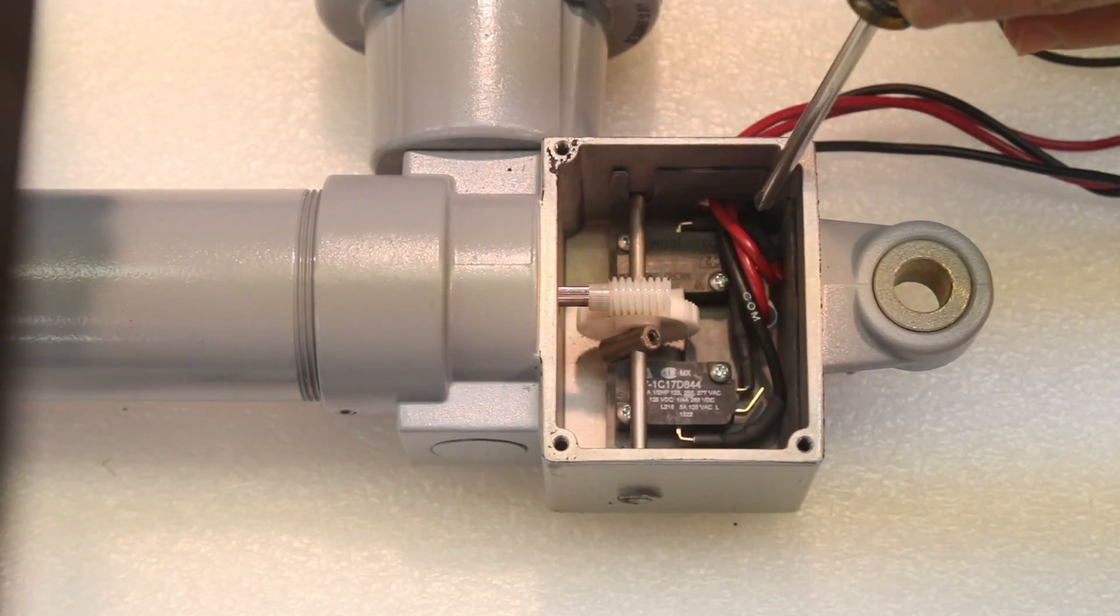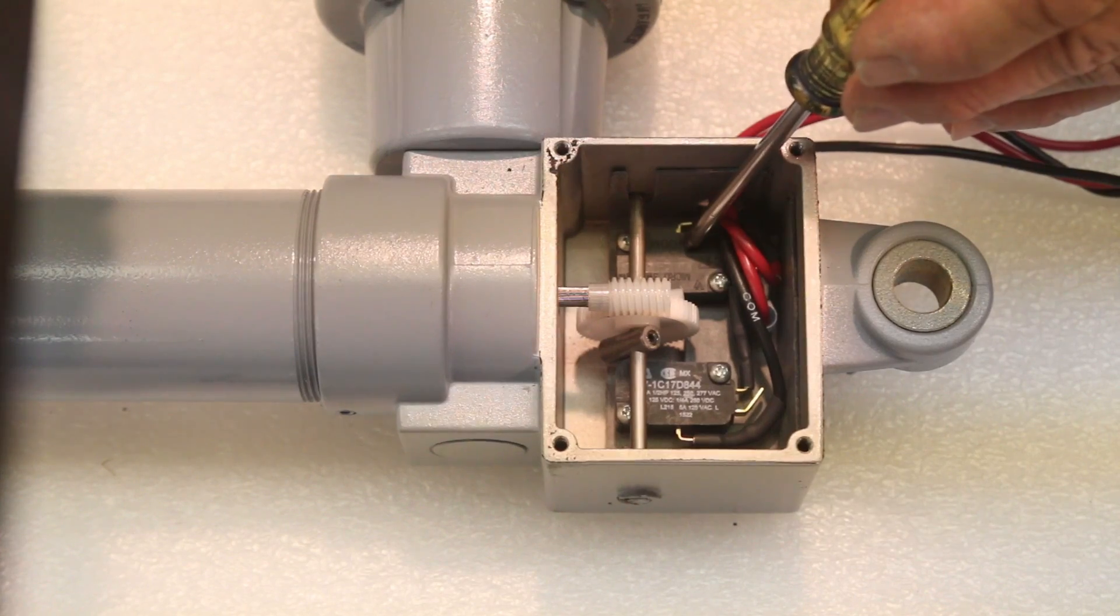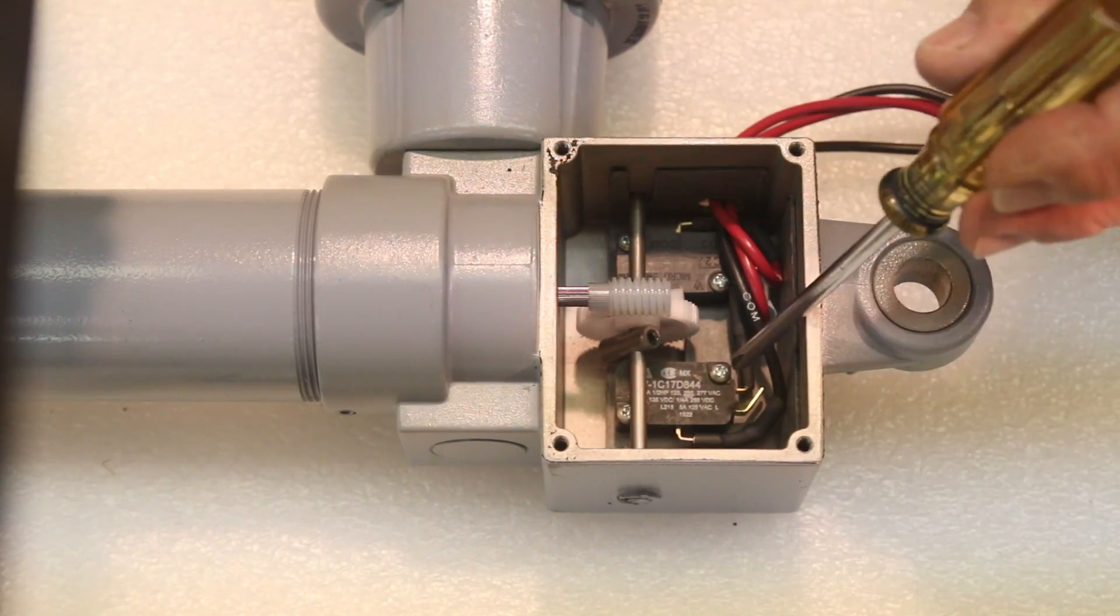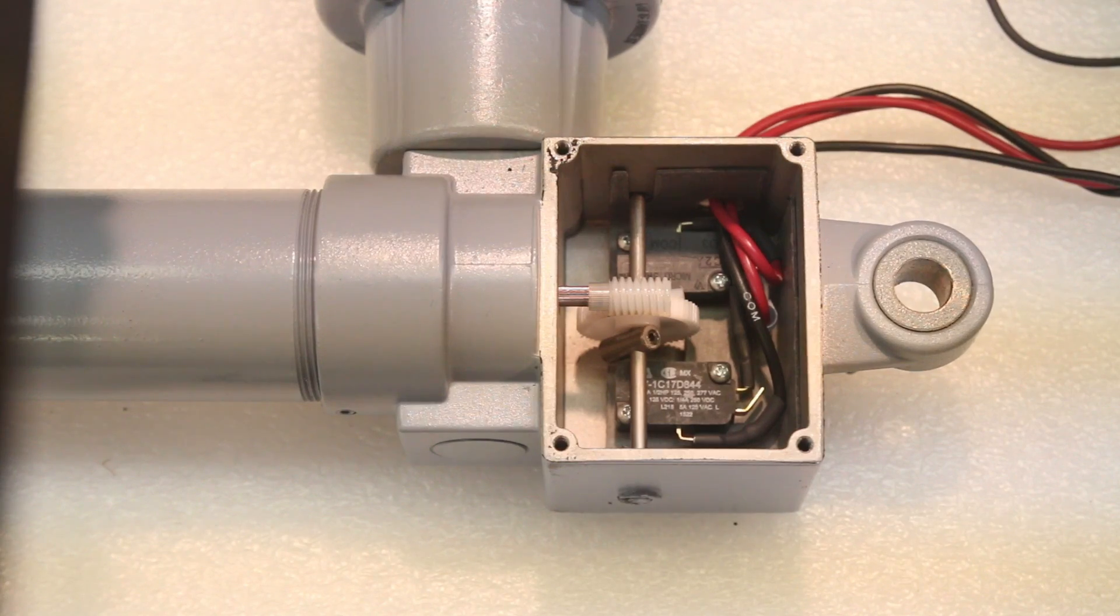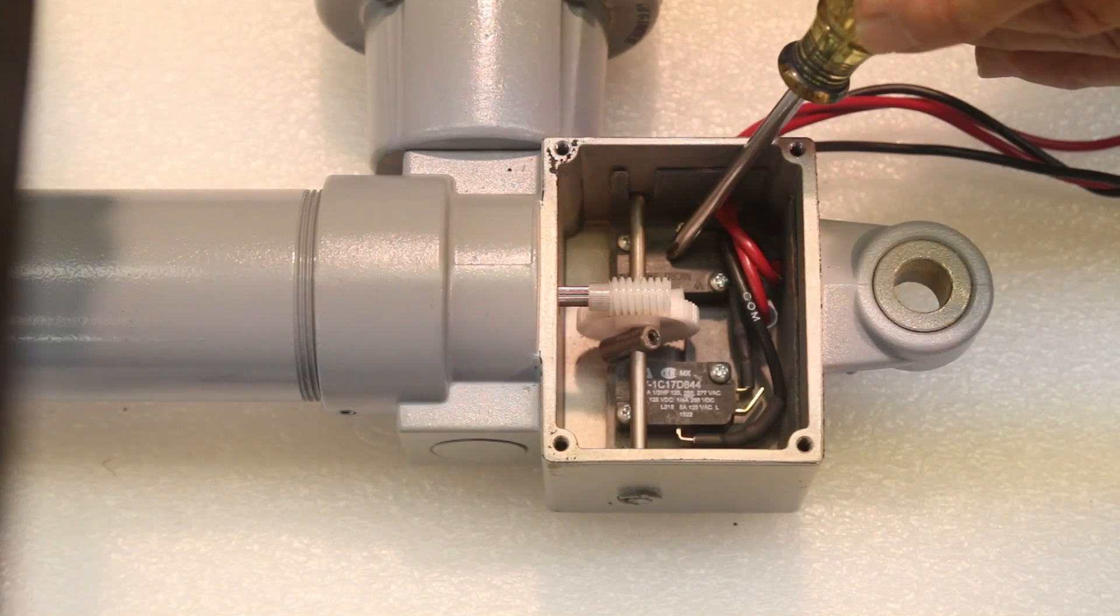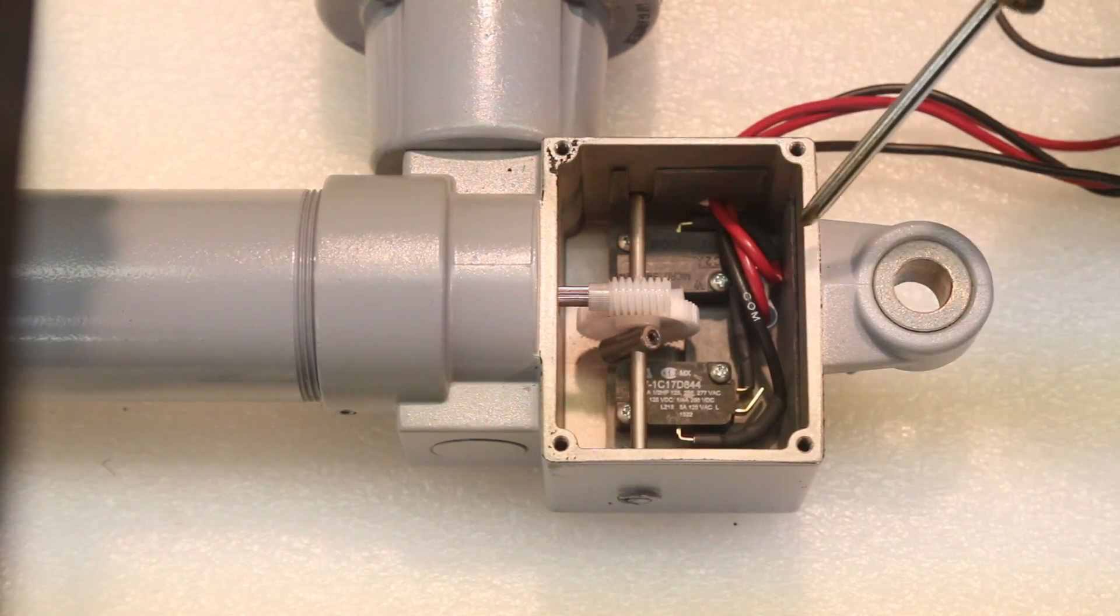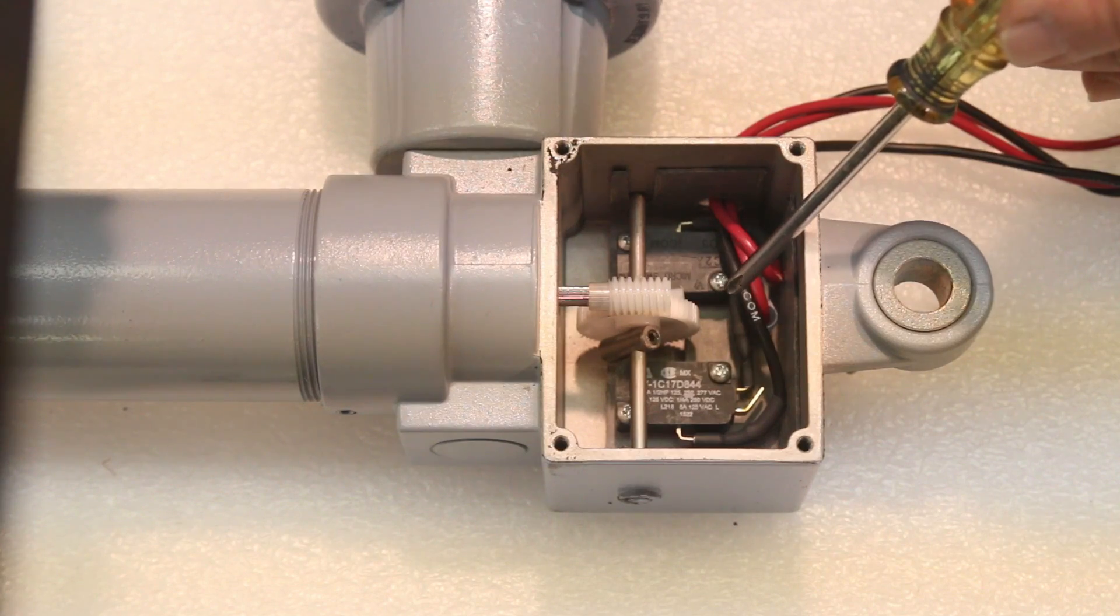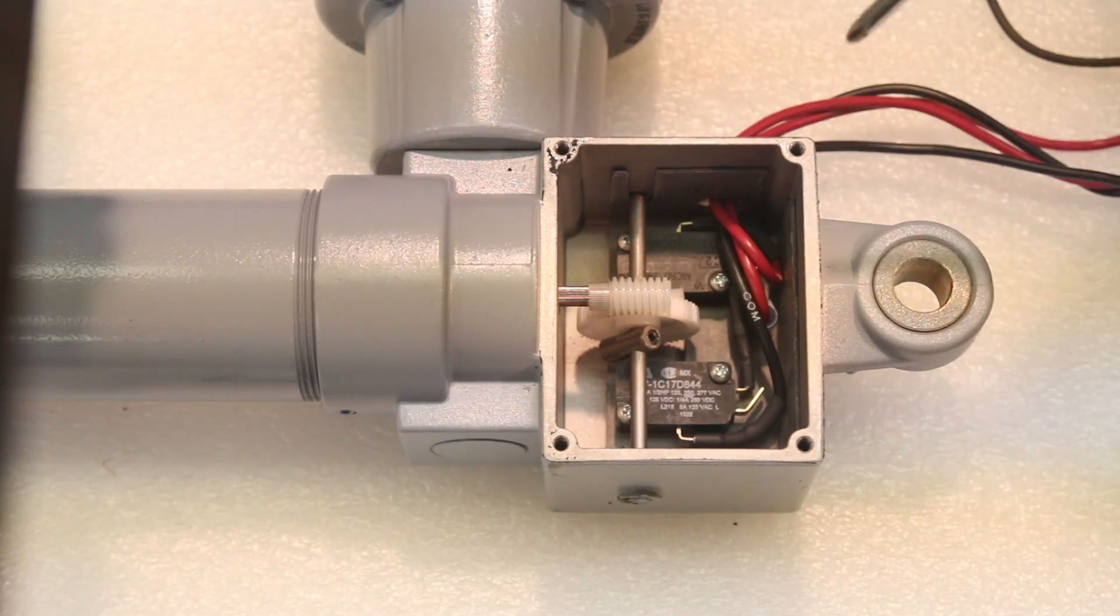The red wires are attached to the retract limit switch, and the black wires are attached to the extend limit switch. The cam gear activates the retract side of the limit switch, and a steel cam with a set screw, which is adjustable, actuates the extend switch.